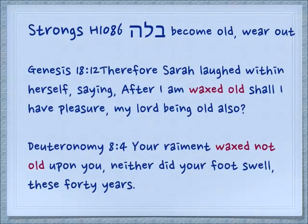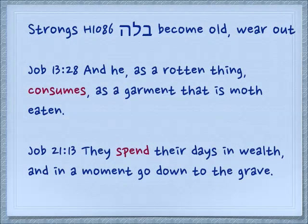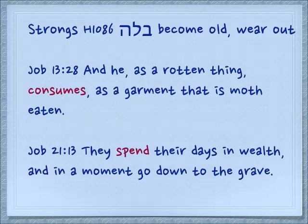So here are the related verbs. The first one is bala — in other words, when something becomes old and wears out, you don't have it anymore. Genesis 18:12: 'Therefore Sarah laughed within herself, saying, After I am waxed old, shall I have pleasure, my lord being also old?' Deuteronomy 8:4: 'Your raiment waxed not old upon you, neither did your foot swell these 40 years.' Job 13:28: 'And he, as a rotten thing, consumes as a garment that is moth-eaten' — in other words, it's eaten up, worn out, and has become old. Also when you use up your time — Job 21:13: 'They spend their days in wealth, and in a moment they go down to the grave.' So these things are gone; you are without them, they don't exist anymore.